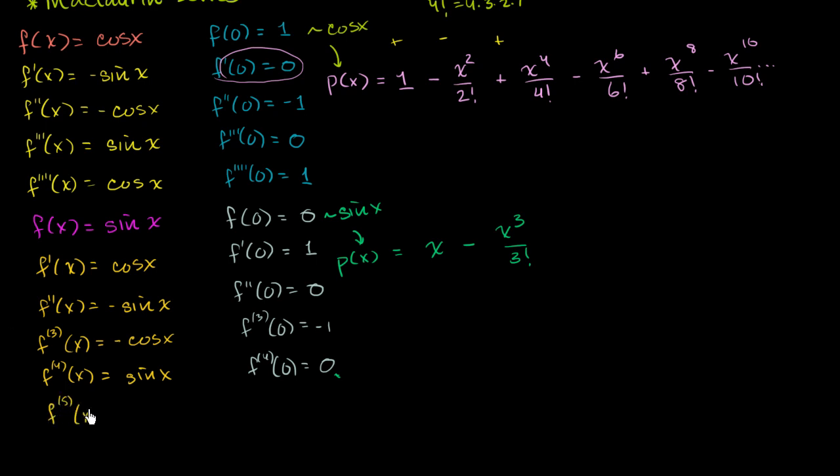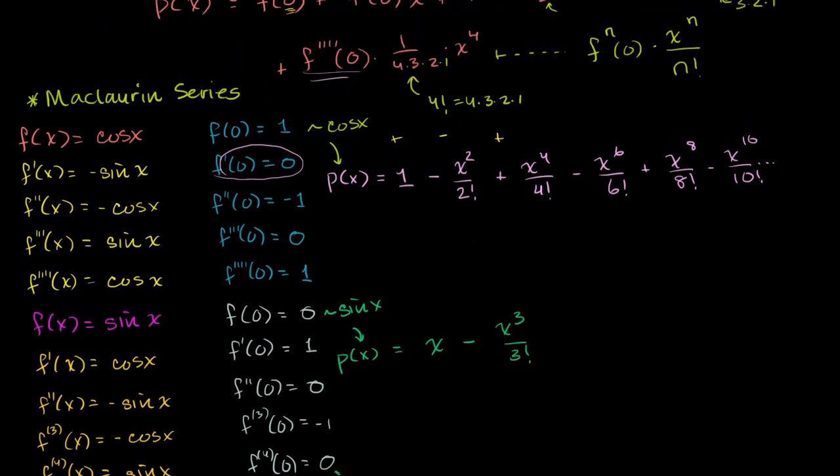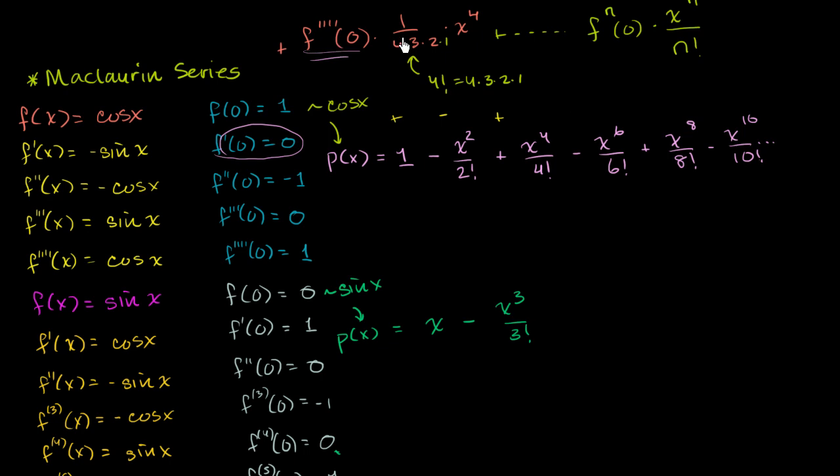f of the fifth derivative of x is going to be cosine of x again. The fifth derivative, let me do it in that same color, just so it's consistent. The fifth derivative evaluated at 0 is going to be 1. So the fourth derivative evaluated at 0, 0. Then you go to the fifth derivative evaluated at 0 is going to be positive 1. And if I kept doing this, it would be positive 1 times, I don't have to write the 1 as a coefficient, times x to the fifth over 5 factorial.